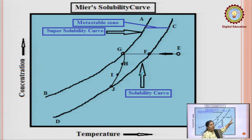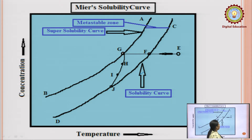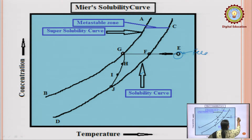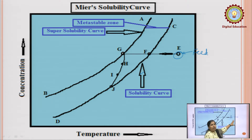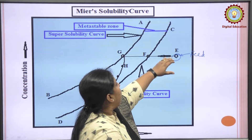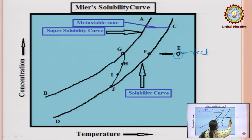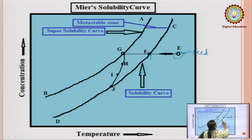At point E, E is the feed point. At a particular temperature and particular concentration, we start cooling the solution at E. As we cool the solution from point E, it comes to point F, which is represented on the solubility curve — at F the saturation point is reached.